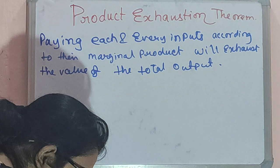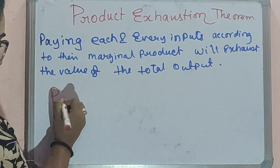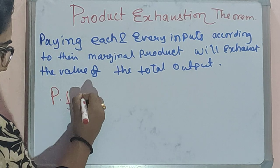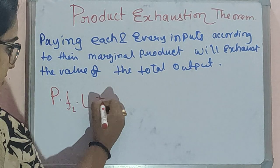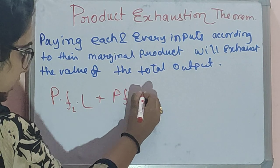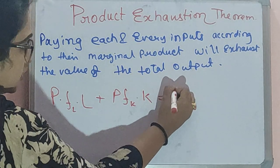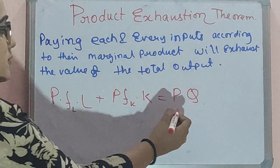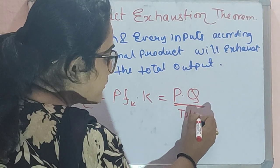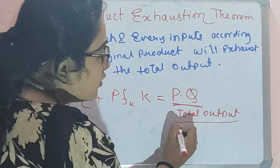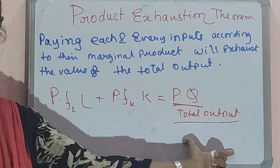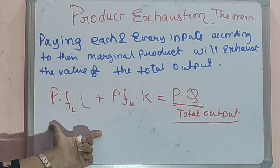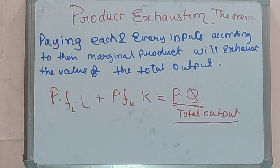How do we write this product exhaustion theorem? It is written as: price into inputs — FL × L plus FK × K must be equal to P × Q. So P × Q is the total output. The value of the total output is totally exhausted while paying the inputs according to their marginal product. Now we will be doing a proof regarding this.